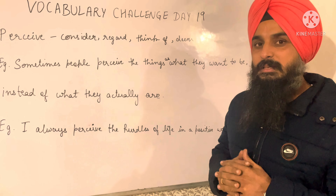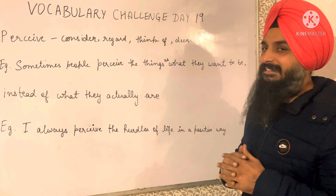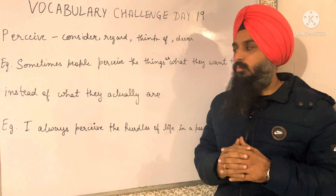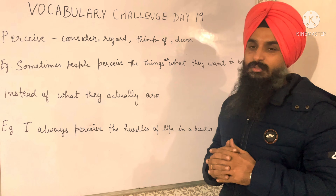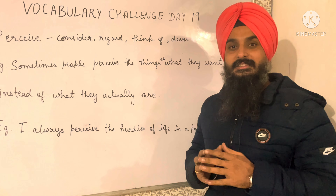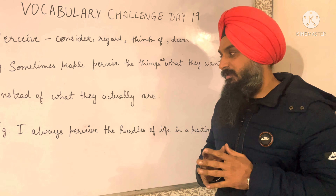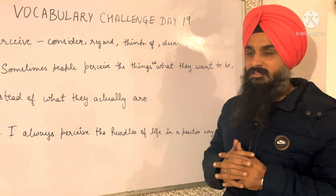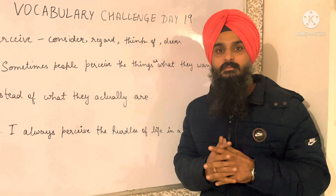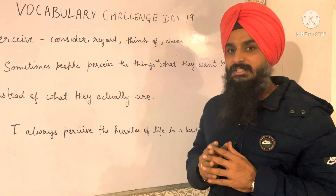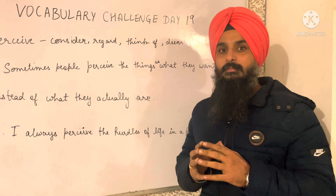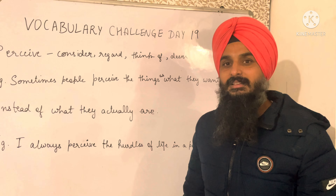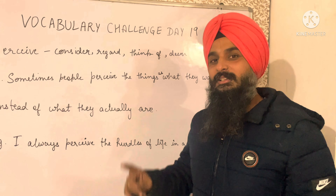The first example is: 'Sometimes people perceive things as what they want them to be instead of what they actually are.' The second example: 'I always perceive the hurdles of life in a positive way,' which means I always consider and think of the hurdles of life in a positive way.